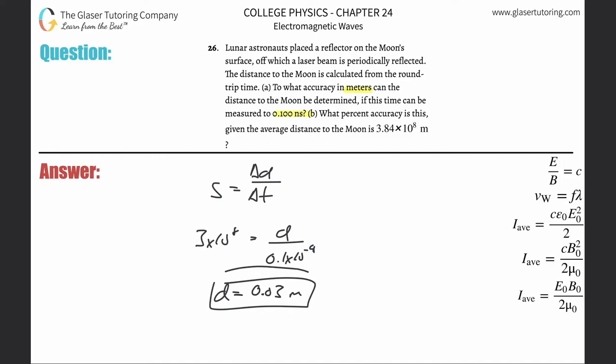But remember this distance we calculated just now is the distance based off of the round trip. The round trip. So the problem is that the round trip takes into account two lengths. It takes into account the length going forward and then the length coming back. So this is twice as much. So the true distance here is going to be, or the true accuracy here in meters is going to be 0.015 meters.